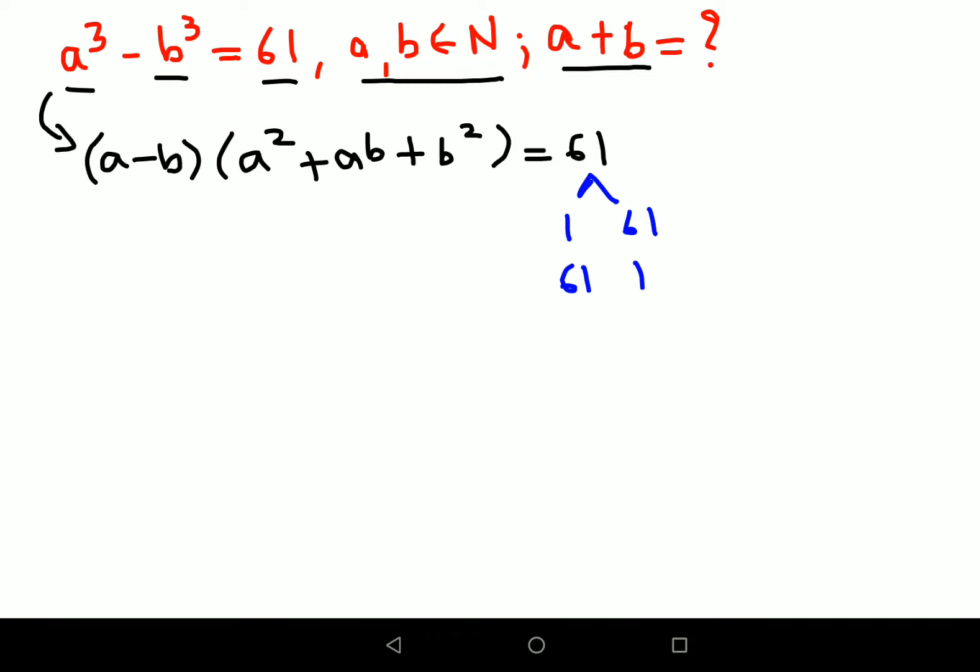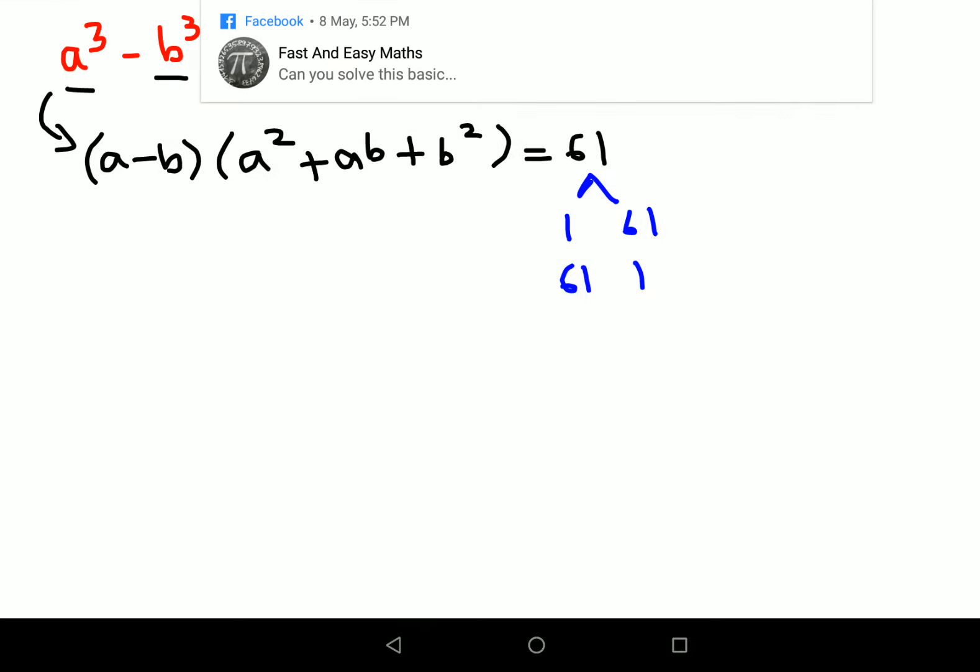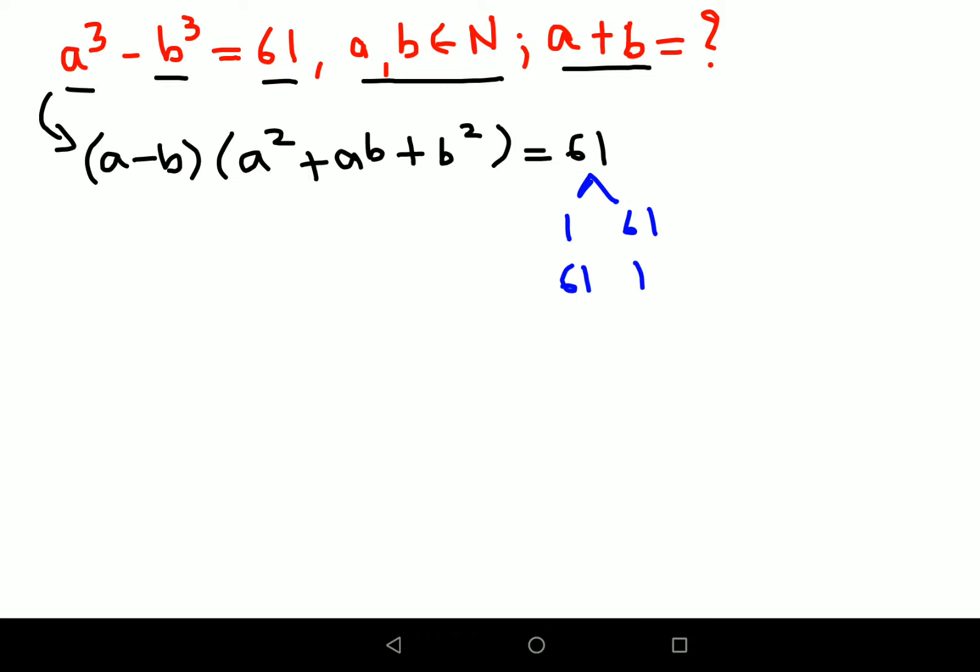Now please understand if you look at this bracket here you have a minus b, and this bracket is completely added. So I know that this value a minus b has to be smaller than a square plus ab plus b square. So from here I can say therefore a minus b value will be 1 and I can also say that a square plus ab plus b square equals to 61.